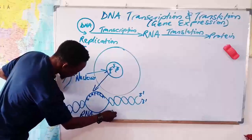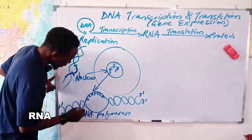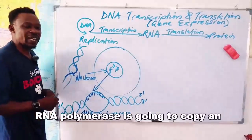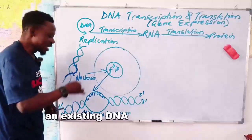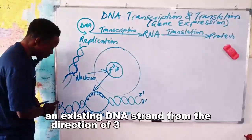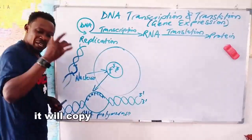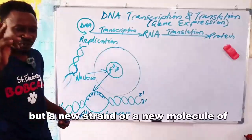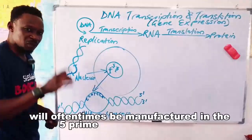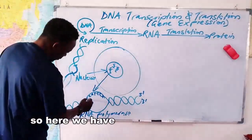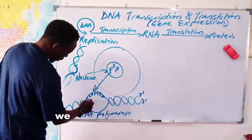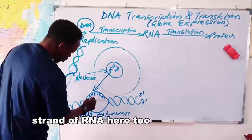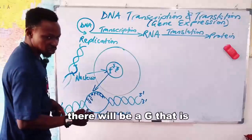We have RNA polymerase I, II, and so on, but generally what RNA polymerase does is build new RNA — it copies DNA and transcribes it into RNA. RNA polymerase copies an existing DNA strand reading from the 3-prime to 5-prime direction, but a new strand of RNA will be manufactured in the 5-prime to 3-prime direction. So here, where the nucleotide is C on the DNA, RNA inserts a G — complementary base pairing.